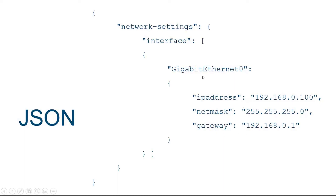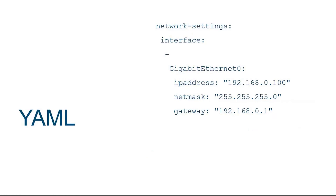In JSON, the interface also has an array for listing additional interfaces. Notice how the structure is defined by curly braces and commas. In YAML, this is the simplest format — the structure is defined by the indentation of white space. IP address, net mask, and gateway are all indented one space within gigabit ethernet zero, making them part of that object. Gigabit ethernet zero is an item in a list because of the dash, and this is all part of the interface object, which is part of the network settings object, defined by the indentation.